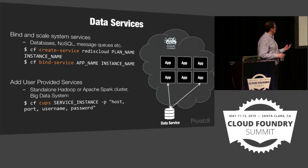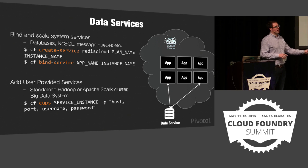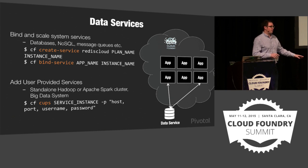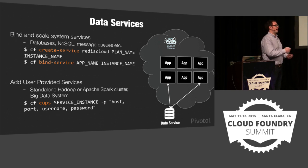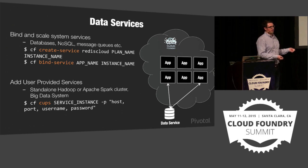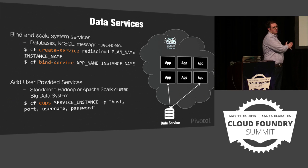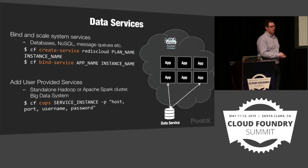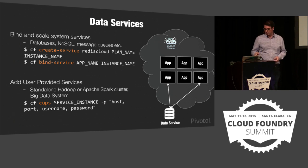One good way of thinking about this is the ease with which you can switch from a test data store to a real live production data store. In a traditional data science approach you might have to actually go and edit your files and change the data flow. Here we can just bind to a different service — one app bound to my test Postgres instance, another bound to my production instance, or I switch between the two. That provides a really easy way of going from one to the other.